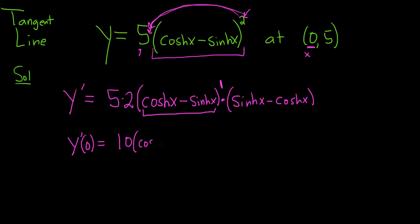So we have cosh of 0 minus sinh of 0 times, then here we have sinh of 0 minus cosh of 0.